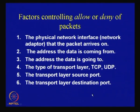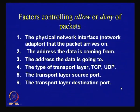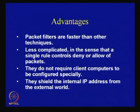The typical factors which control allow or deny of packets include: the physical network interface or adapter the packet arrives on, the address the data is coming from, the address the data is going to, the type of transport layer protocol (TCP or UDP), the transport layer source port, and the transport layer destination port. These are checked against incoming or outgoing packets — if they match, they are allowed; if not, they are blocked. Advantages of packet filters include that they are fast, perform minimal security checks, are less complicated, do not require special client configuration, and shield internal IP addresses from the external world.